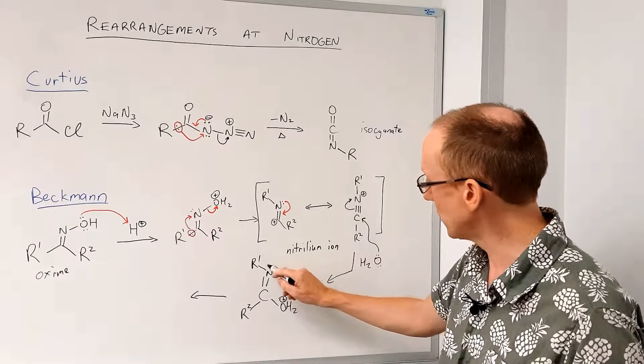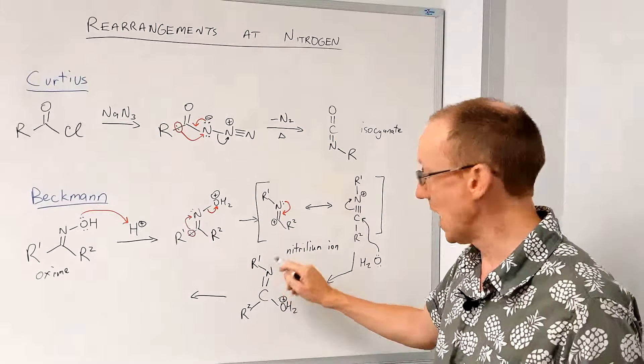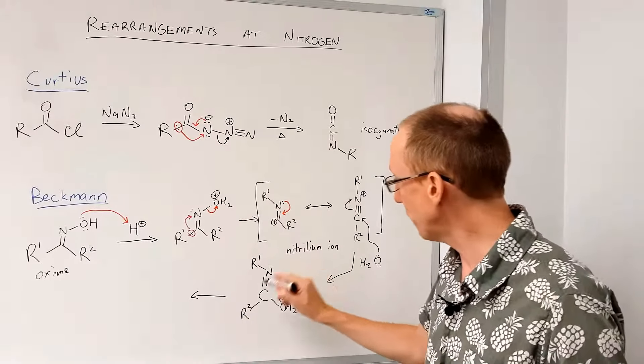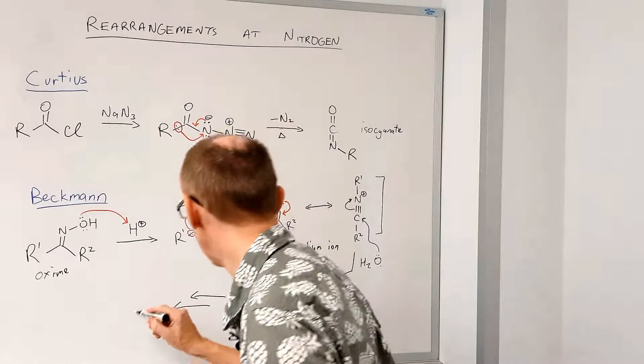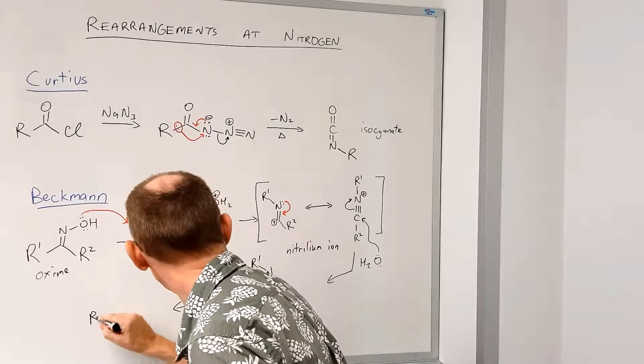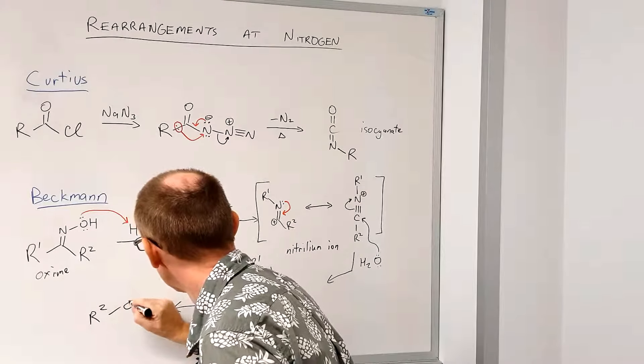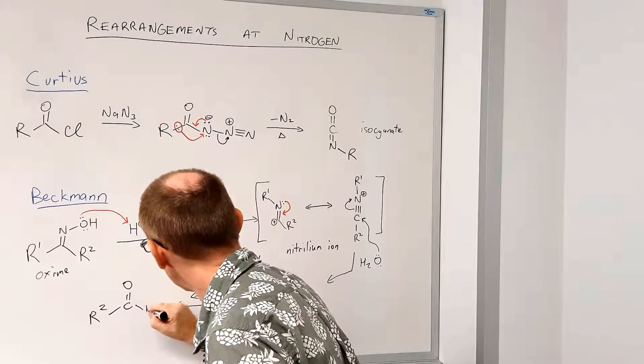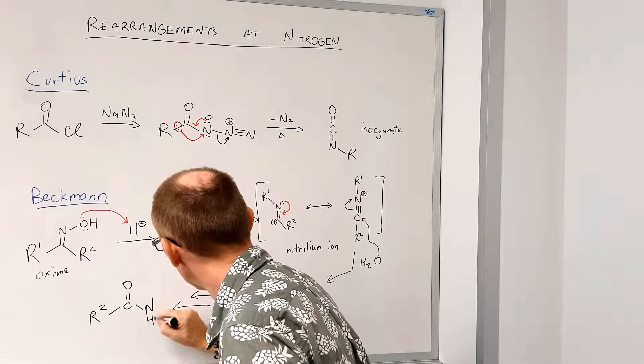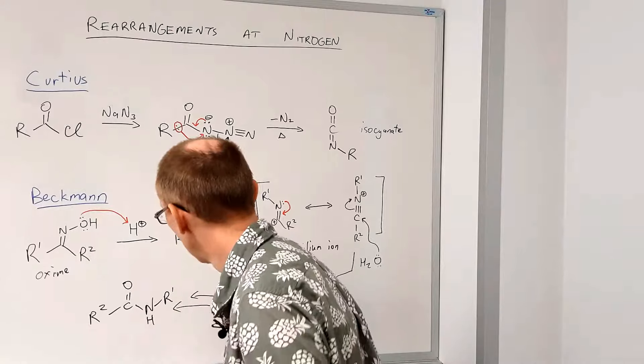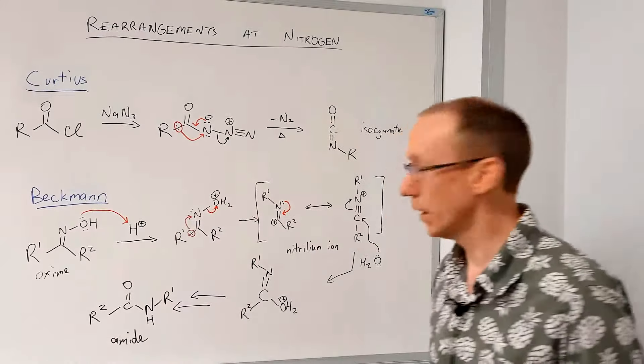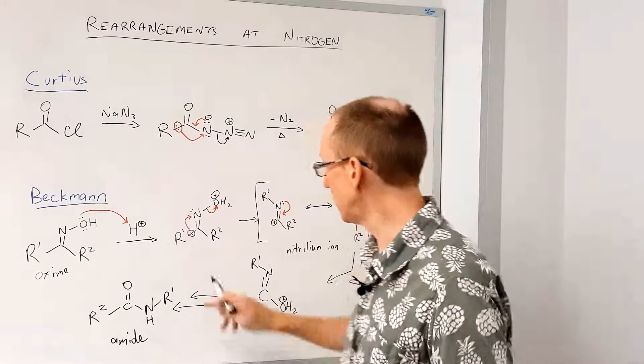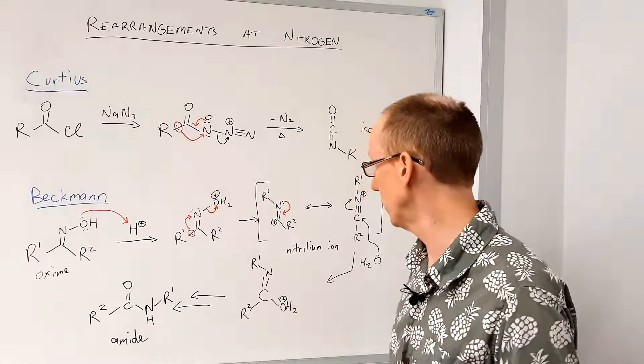But you should be able to transfer protons by a base, picking up a proton here, and nitrogen picking up a proton, and then moving electrons around, and get from that to a very stable species, which is the amide. Okay, amides are incredibly stable, and so this is a very favorable process overall.